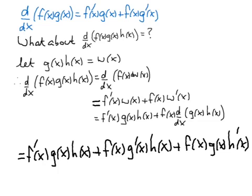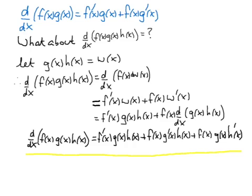When differentiating a product of three functions, we get three terms, writing out the product three times: in the first term we differentiate the first function, in the second term the second, in the third term the third. For a product of four functions there would be four terms, differentiating each function in turn. It's good practice to write the functions in the original order and place the derivative in the correct position in each term, making it easy to keep track.